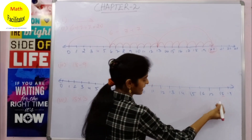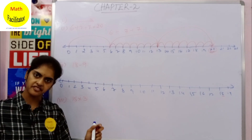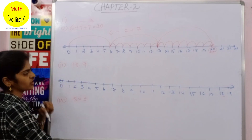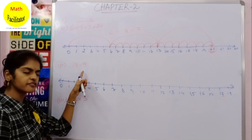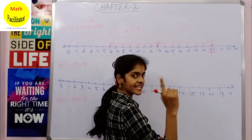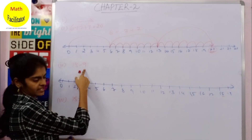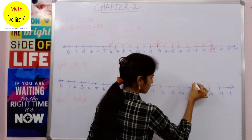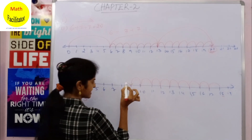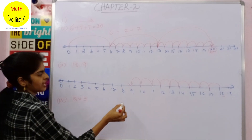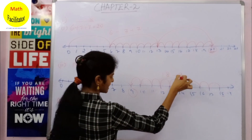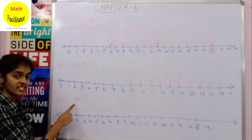Since you are subtracting, you will start from 18 and move to the left on the number line. For addition you move to the right; for subtraction you move to the left. You have to move 9 steps to the left. So from 18 you move 1, 2, 3, 4, 5, 6, 7, 8, and 9 steps, and you arrive at 9. So 18 minus 9 is 9.